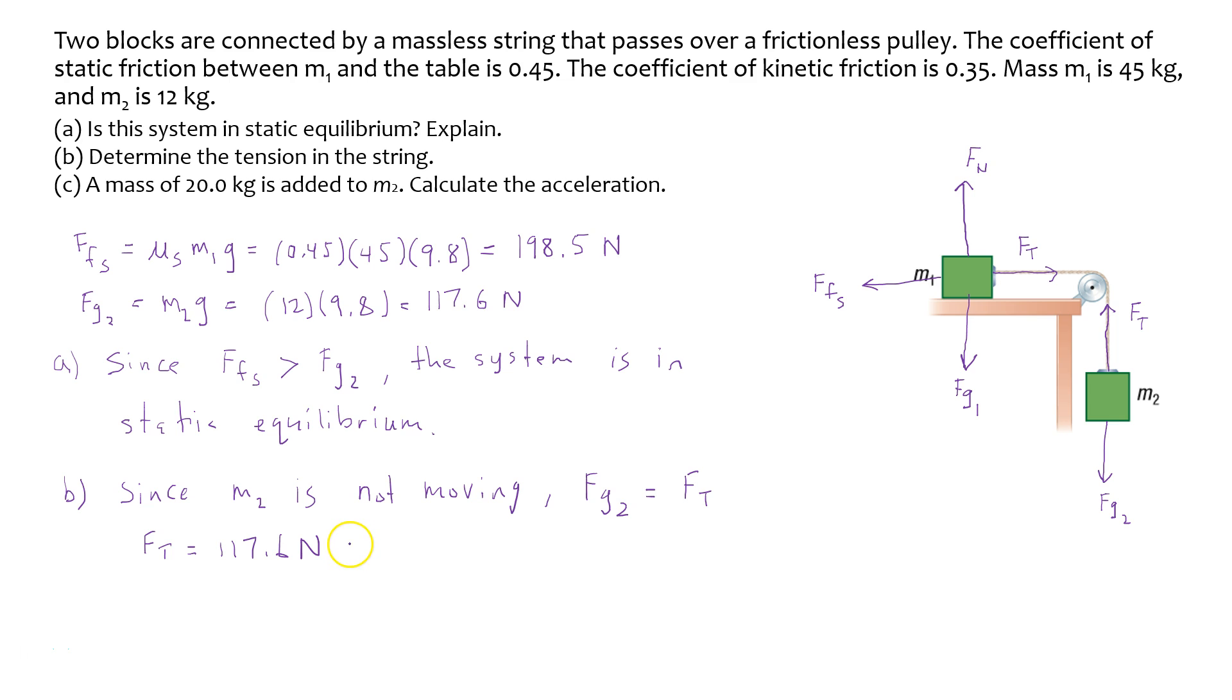Now, when writing the answers, we have to make sure that we check what the number of significant digits should be. So in the question, all these numbers are to two significant digits. So this answer here, the tension, the value for the tension force should also only have two significant digits. And so we're going to have to round this to 120 Newtons. So that would be the force of tension in the string.